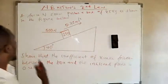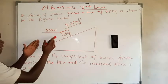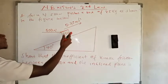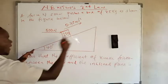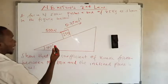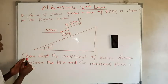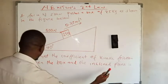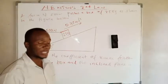The question says a force of 500 newtons pushes a box of 25 kg, giving the block an acceleration of 0.7 meters per second squared. The incline has an angle of 40 degrees. The question asks us to show that the coefficient of kinetic friction between the box and the inclined plane is 0.41.